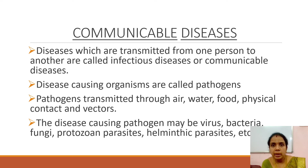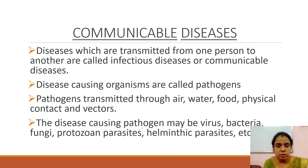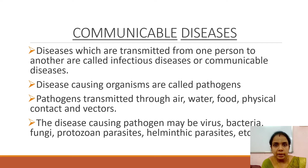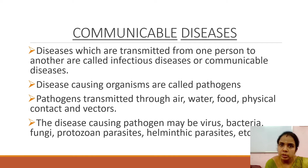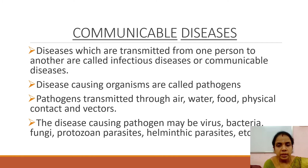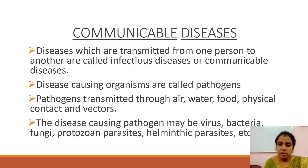What are the ways diseases transmit? Air, water, food, physical contact, and vectors. Vectors include mosquitoes, sand flies, and house flies — they can transmit from one person to another. The causative pathogens include viruses, bacteria, fungi, protozoan, and helminths.